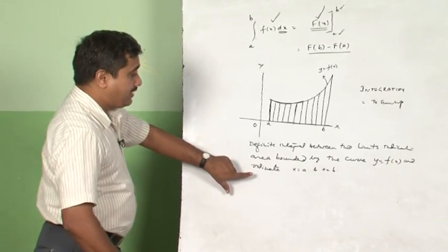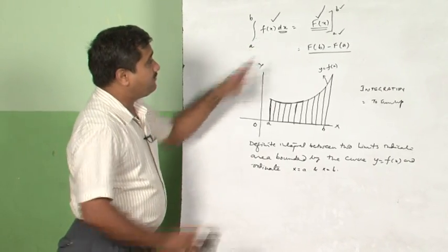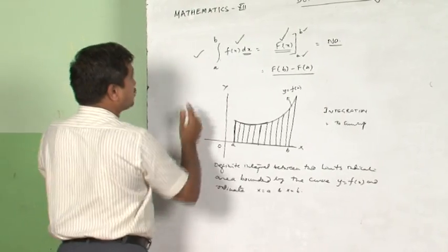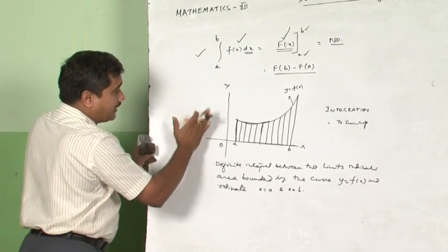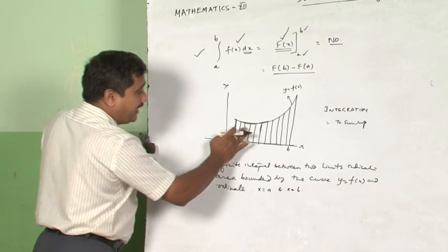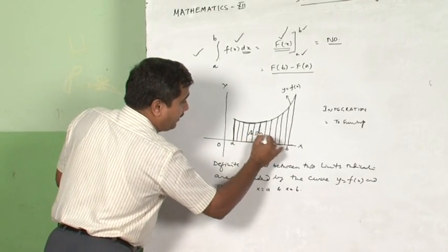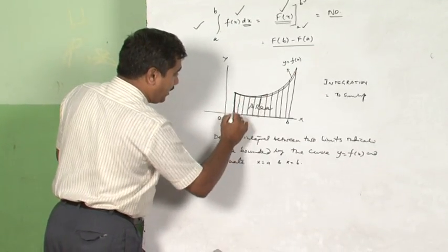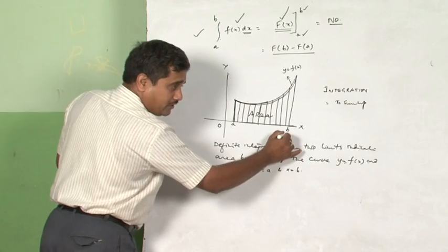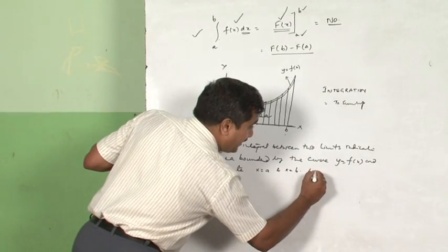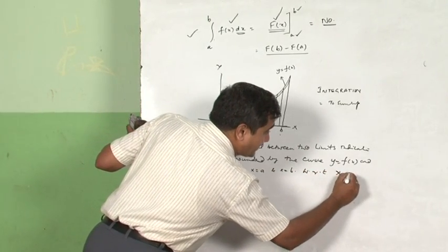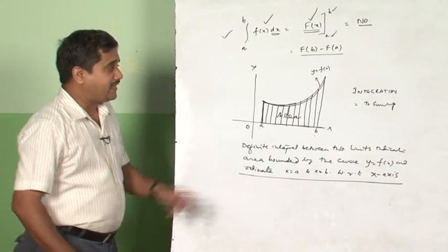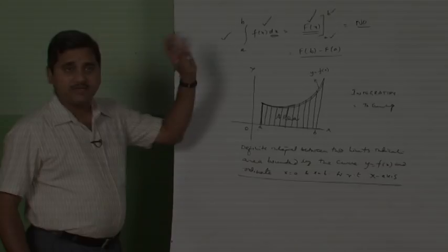So, dear children, what exactly we have understood? Definite integral will always give you a number. Number 2, what we have understood? Definite integral geometrically explains the area bounded by the curve y is equal to f of x and the ordinates x is equal to a and x is equal to b with respect to x-axis. So, this is exactly we have to understand now in the definite integrals.